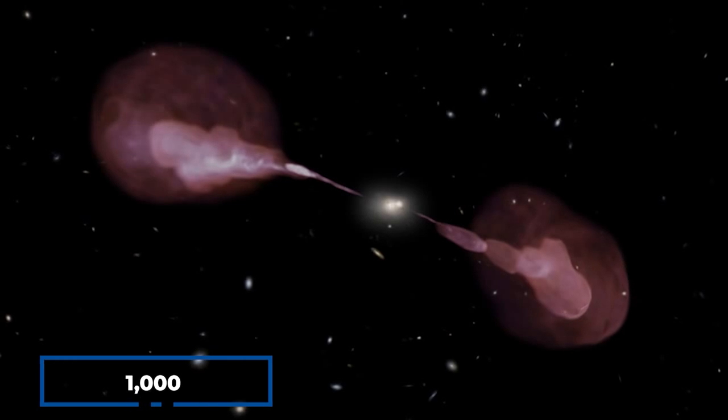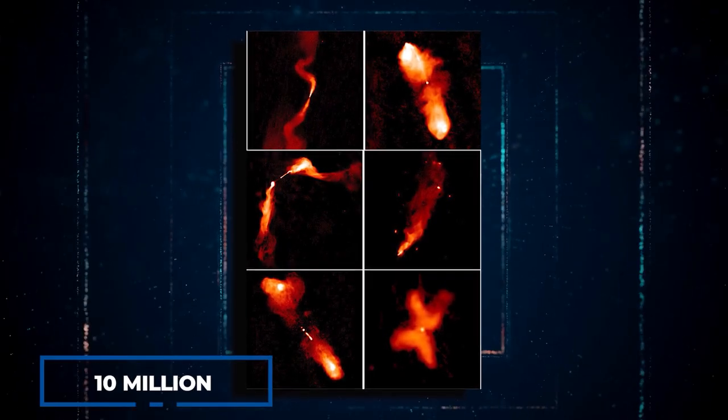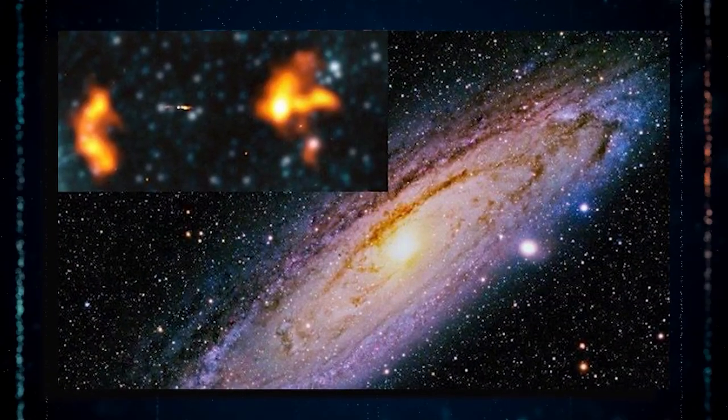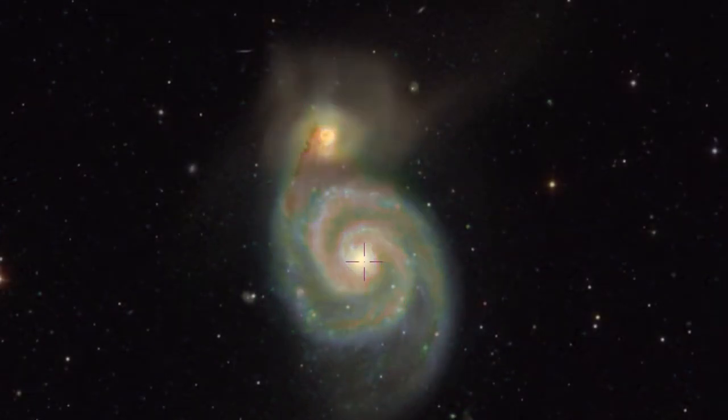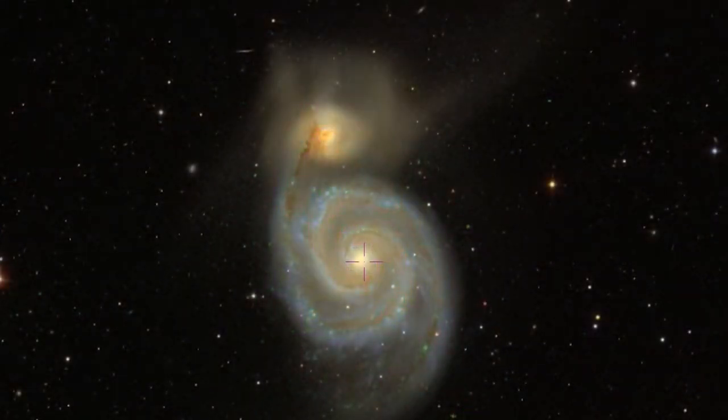Out of approximately 1,000 radio galaxies identified, merely 10 surpassed the 10 million light-year mark in length. The discovery of Alcyoneus emerged from the meticulous analysis of data generated by the LOFAR 2-metre sky survey, also known as LoTSS.